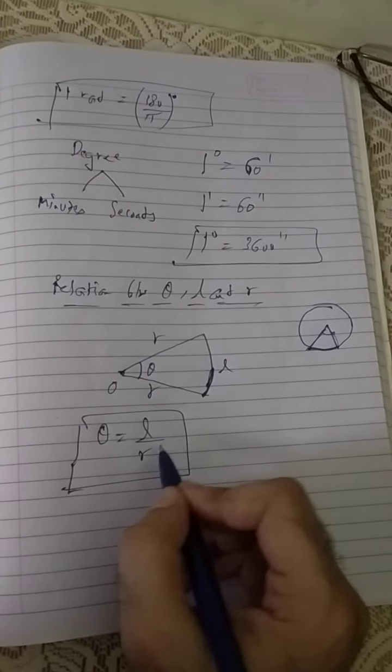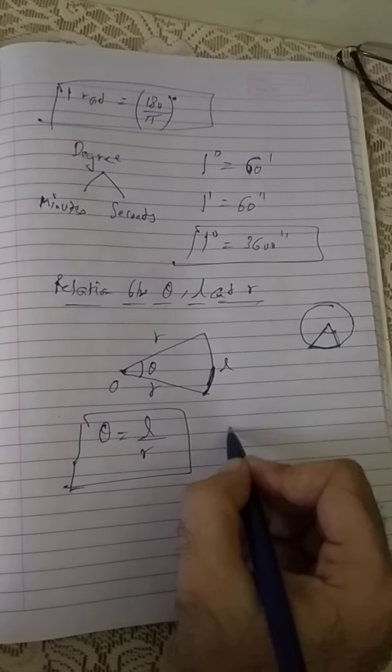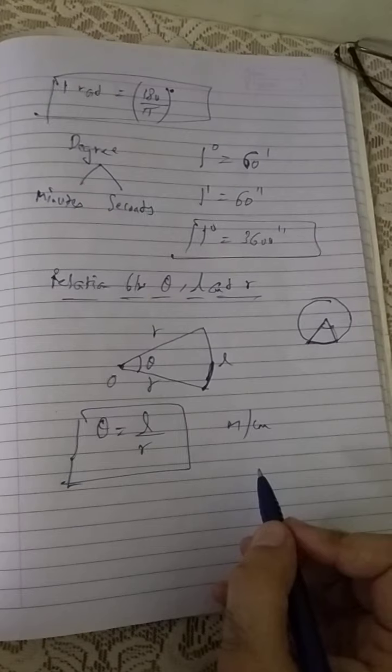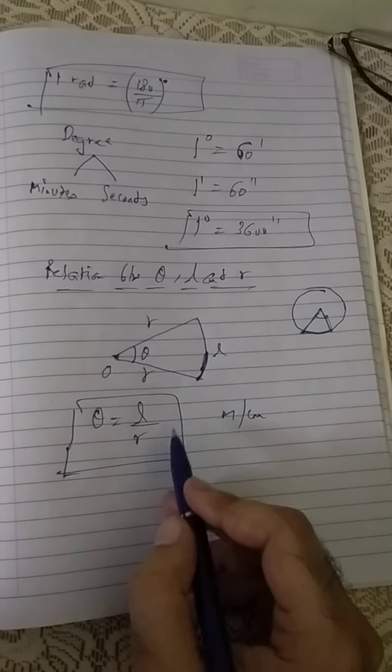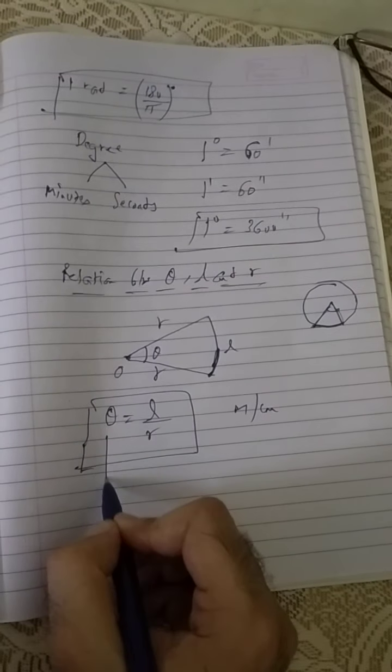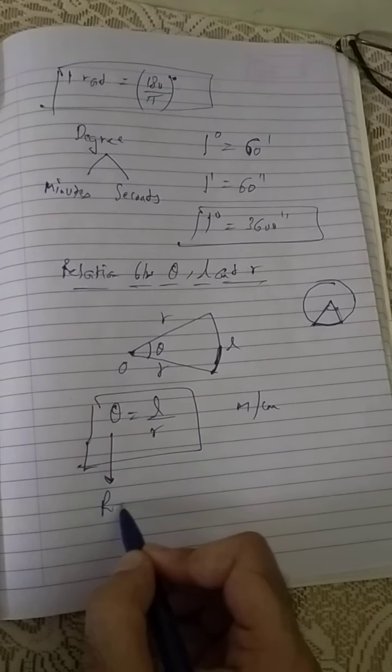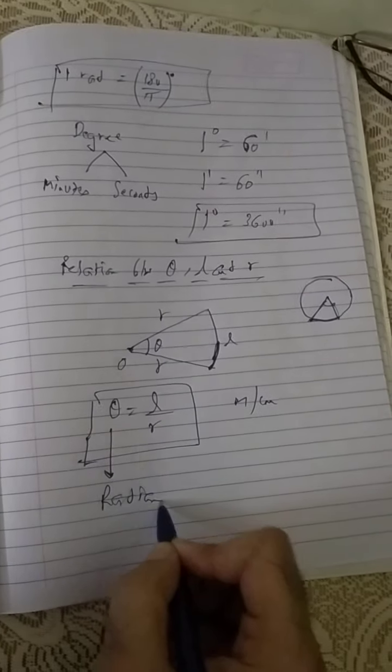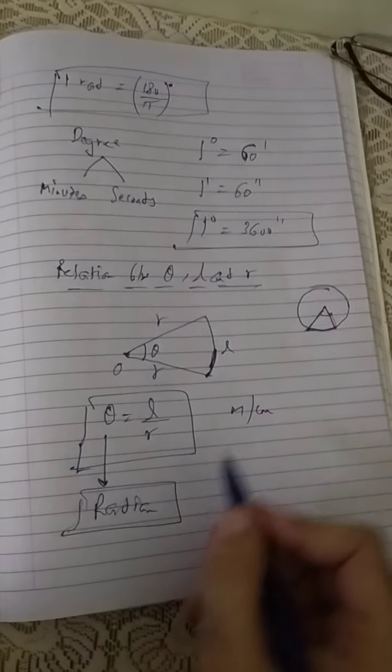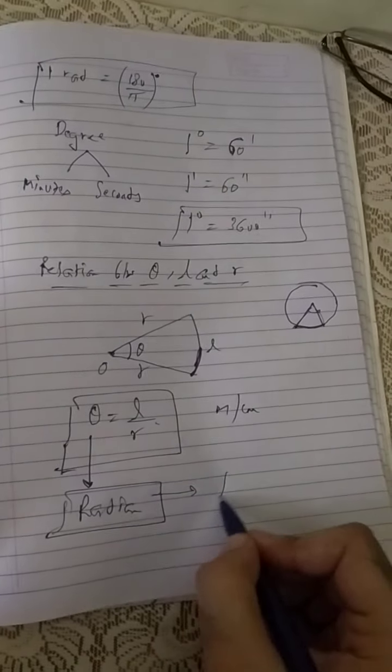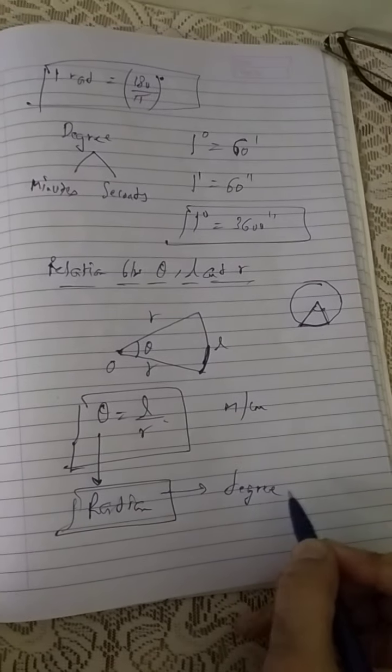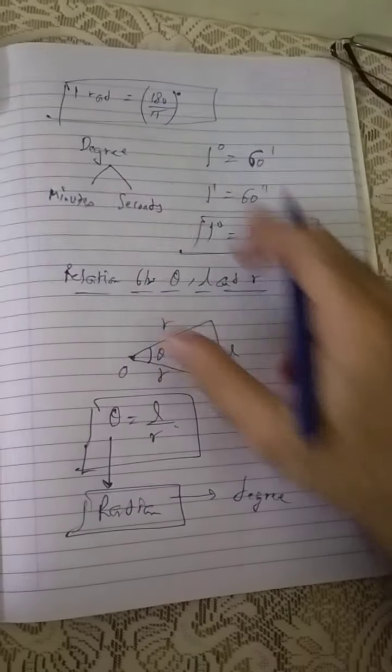Where both are taken in the same units, either in meter or centimeter, whatever is the given thing. And if it is same, it will come out to be in radian, and then you can convert it into degree by the factor 180 by π.